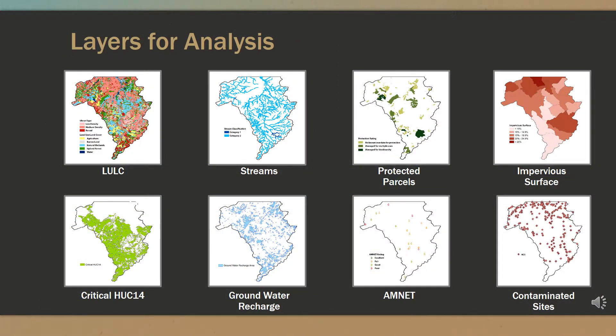Here the layers for analysis are shown. They are land use land cover, streams, protected parcels, impervious surface, critical HUC 14, groundwater recharge, ambient biomonitoring network, and contaminated sites.